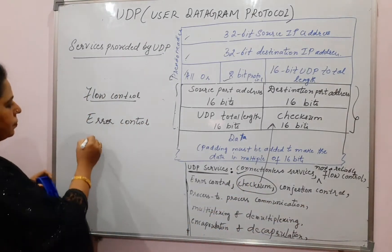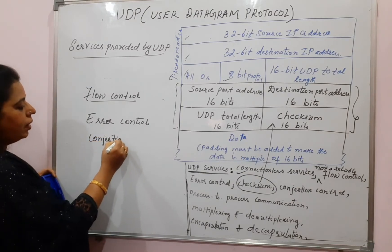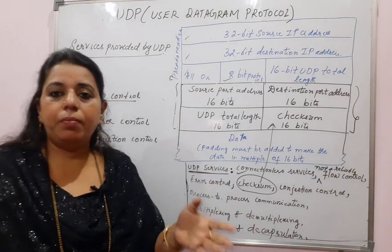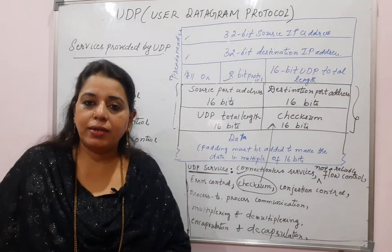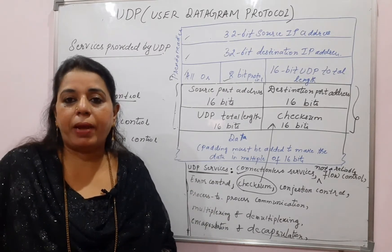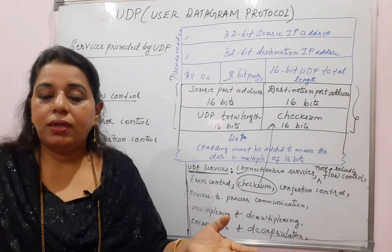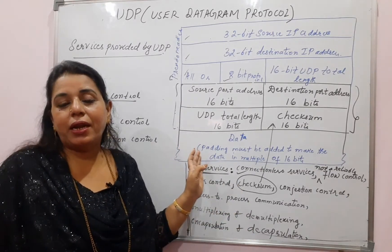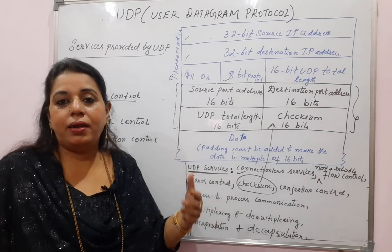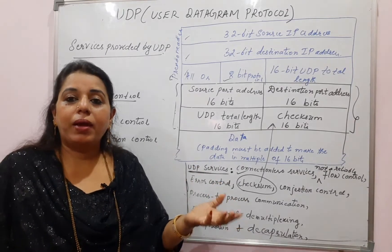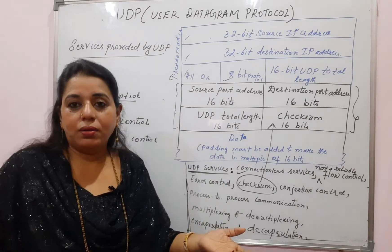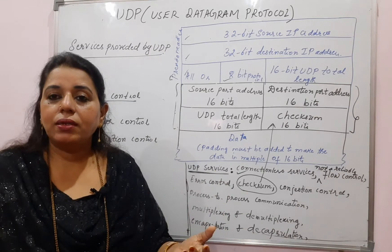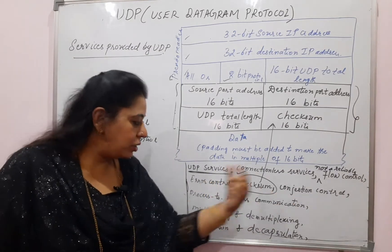Regarding congestion control in UDP: the network components, the in-between components between sender and receiver — that is the routers — should also process the packets at the rate at which the sender is sending, otherwise it will lead to congestion in the network. UDP does not support congestion control. It assumes that the packets are small and are not going to create long waiting times at the routers or get queued up for processing.